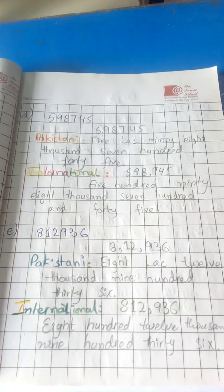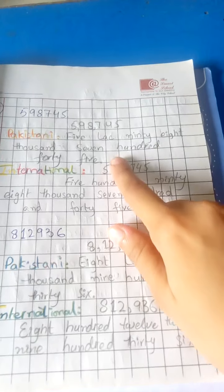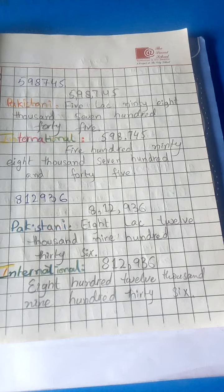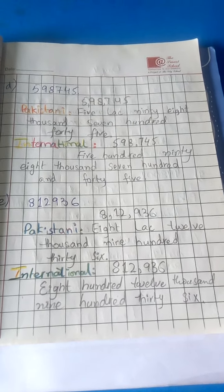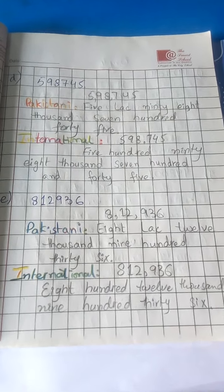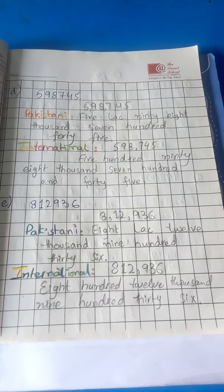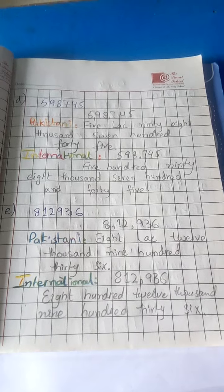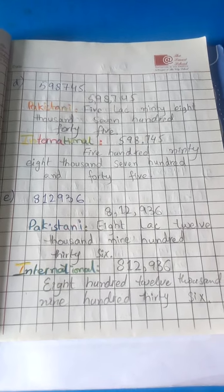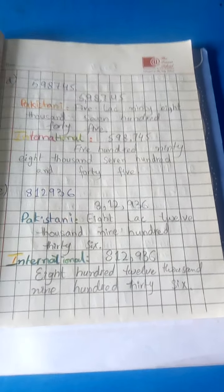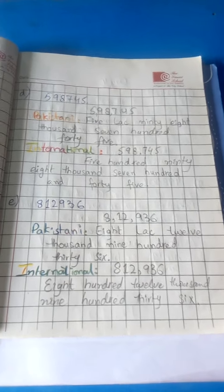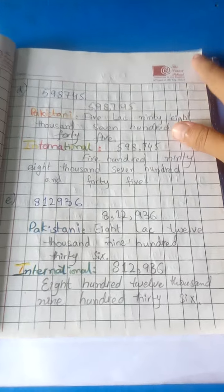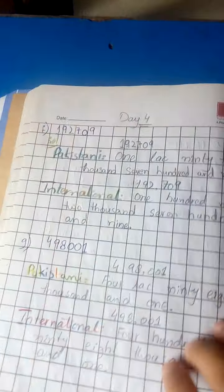In international form, you write with one comma. Now part e: in Pakistani value system, eight lakh twelve thousand nine hundred and thirty-six. In international form: eight hundred twelve thousand nine hundred and thirty-six.